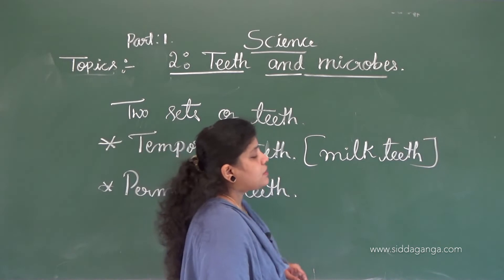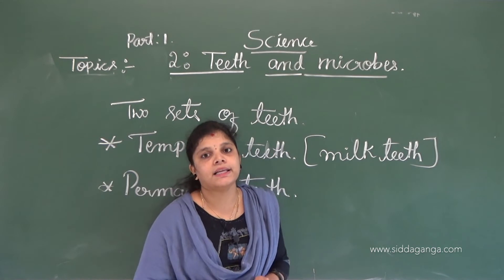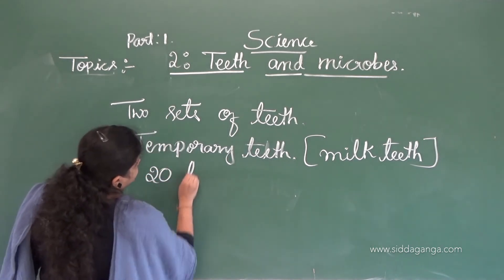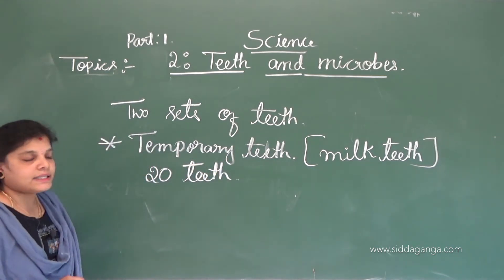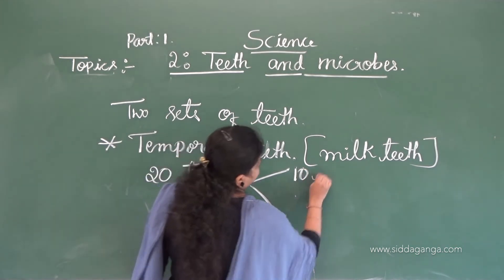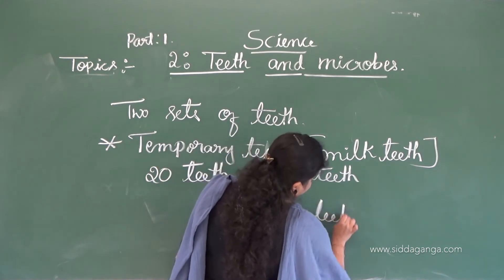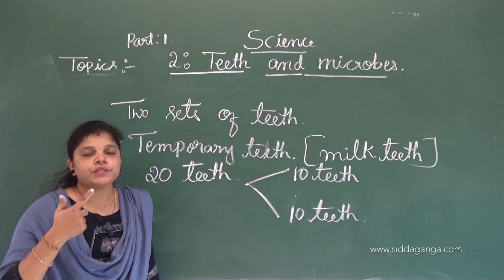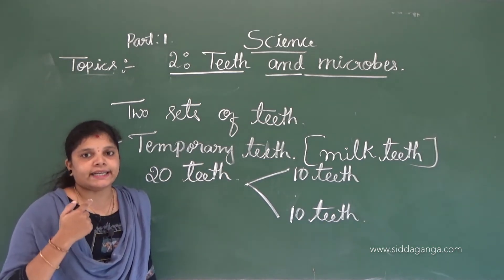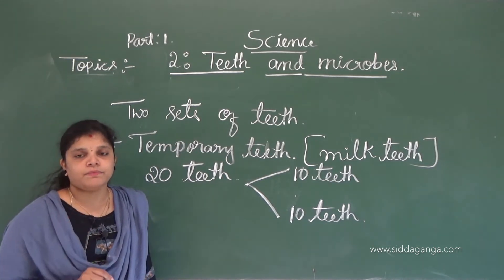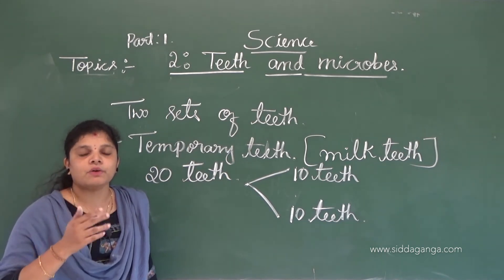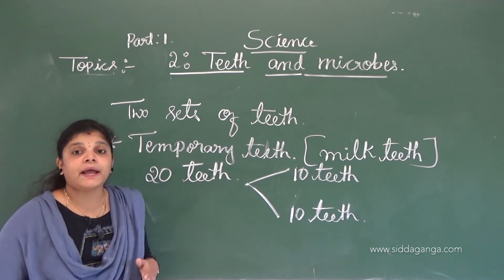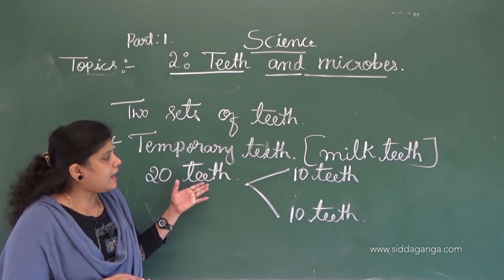For milk teeth, there are 20 teeth in total. In each jaw — upper jaw and lower jaw — there are 10 teeth each. So 10 plus 10 gives a total of 20 teeth in babies. By three years of age, children have all 20 temporary teeth.